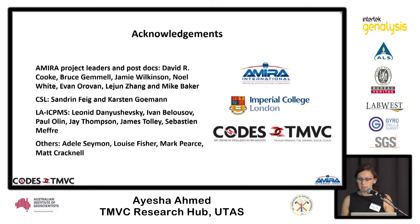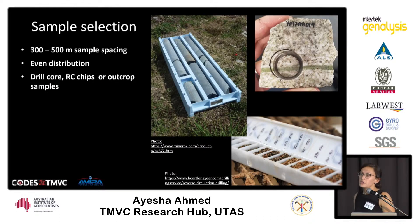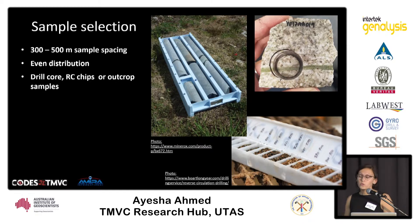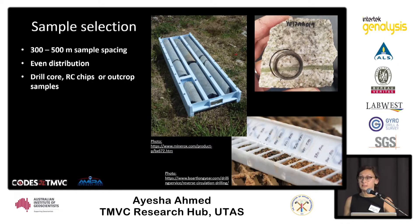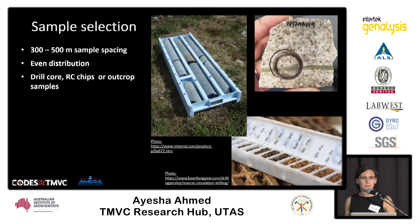The first step in the mineral chemistry workflow is sample selection, which occurs in the field. We suggest collecting samples on about a 300 to 500 meter grid spacing, with the goal of having as even a distribution as possible. In reality we're often limited by depth of cover or drilling, but the goal is an even sample distribution. It doesn't matter what your sample medium is — you can use drill core, RC chips, or outcrop samples.